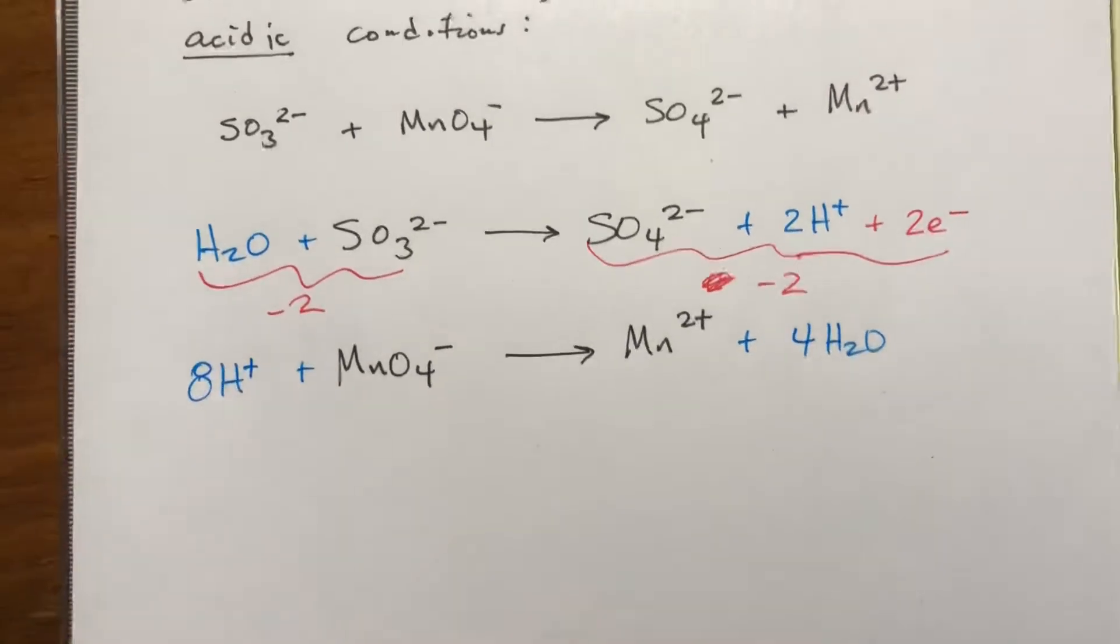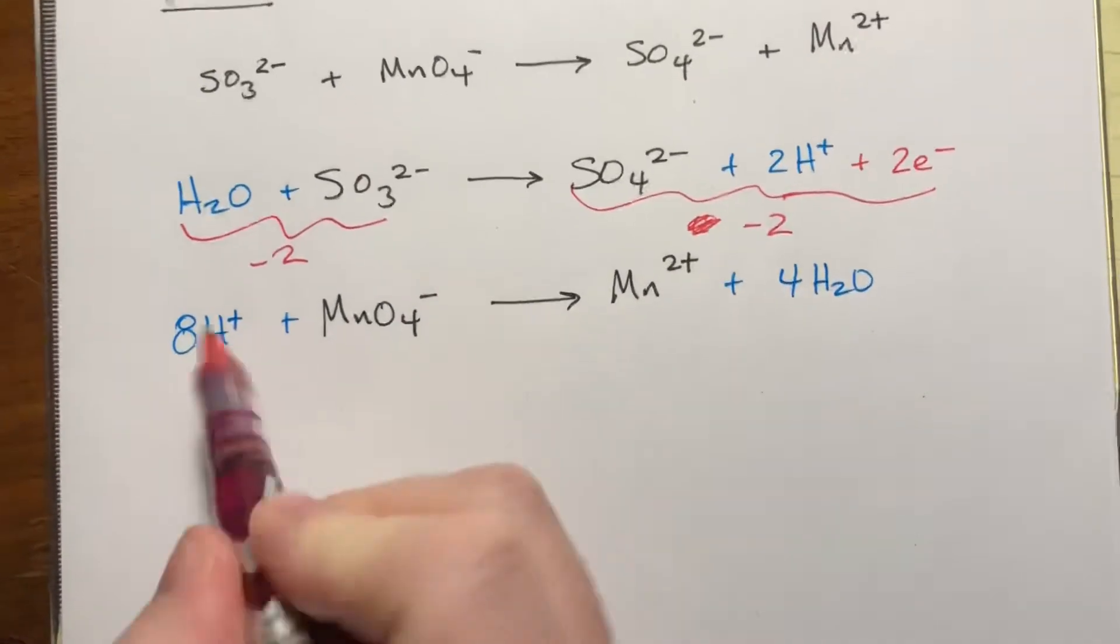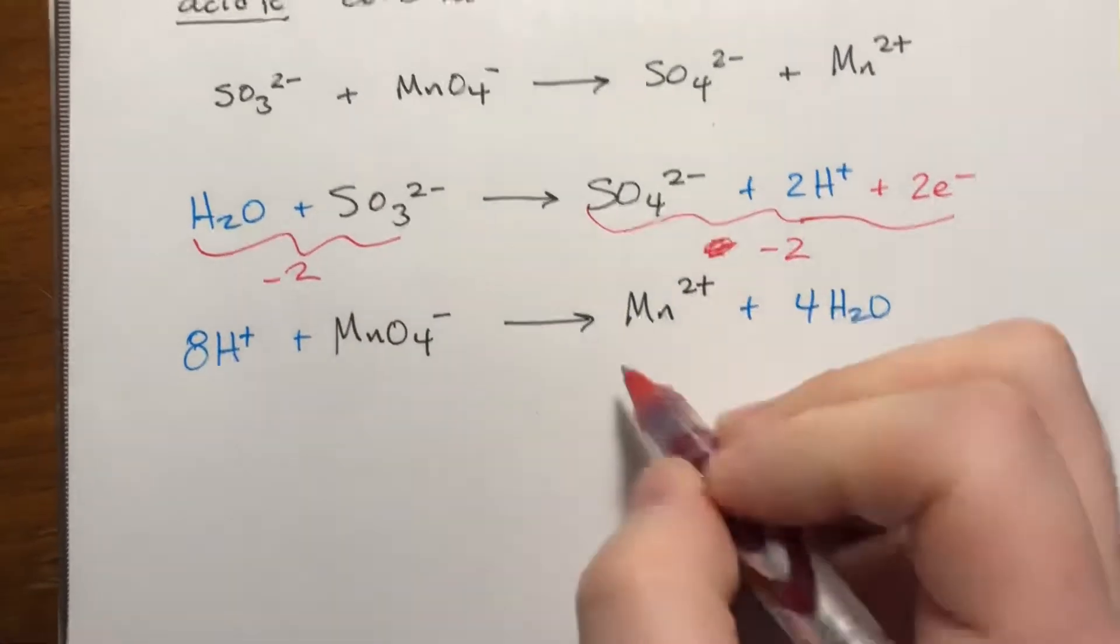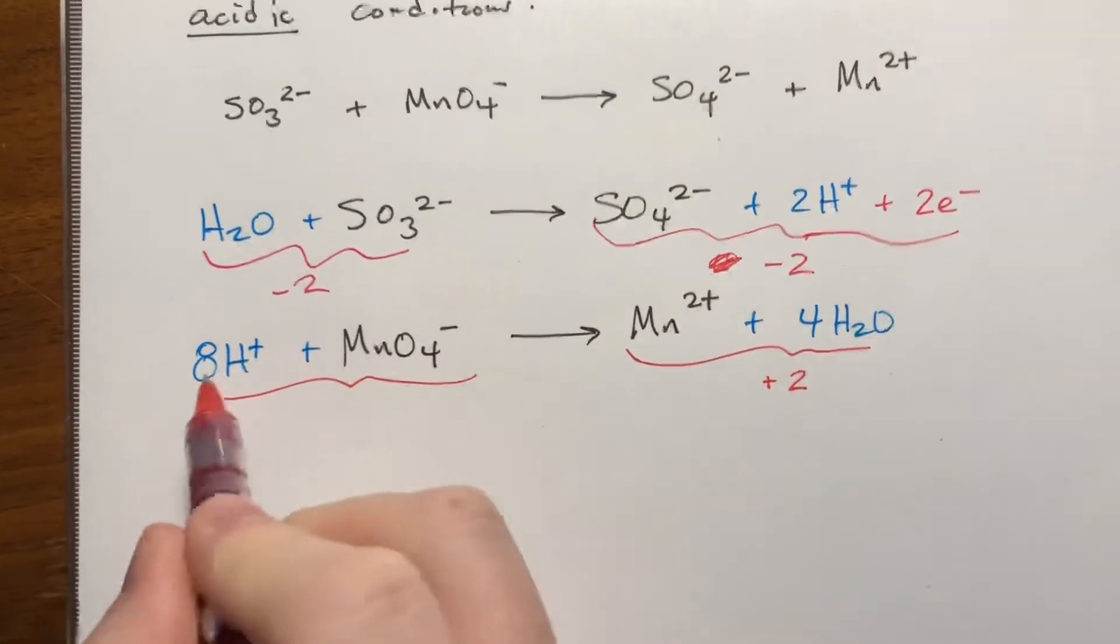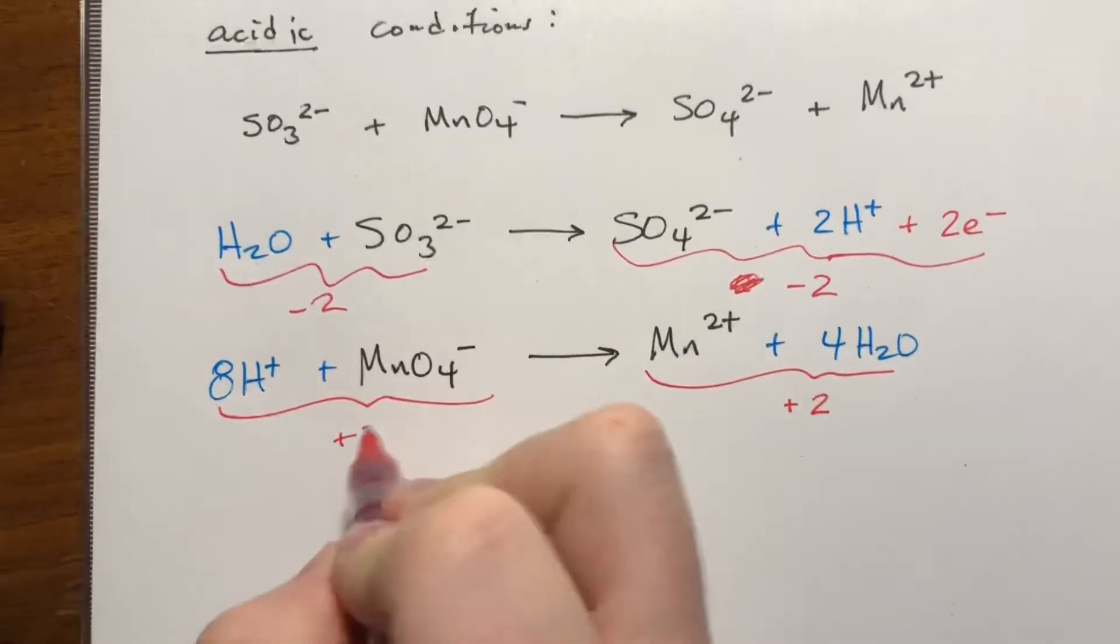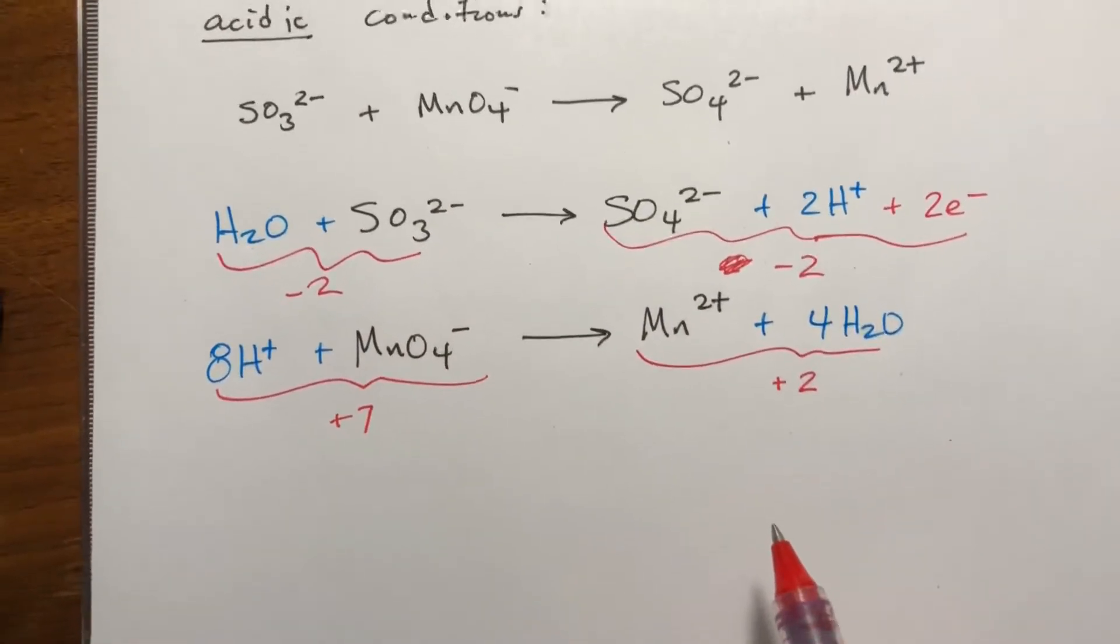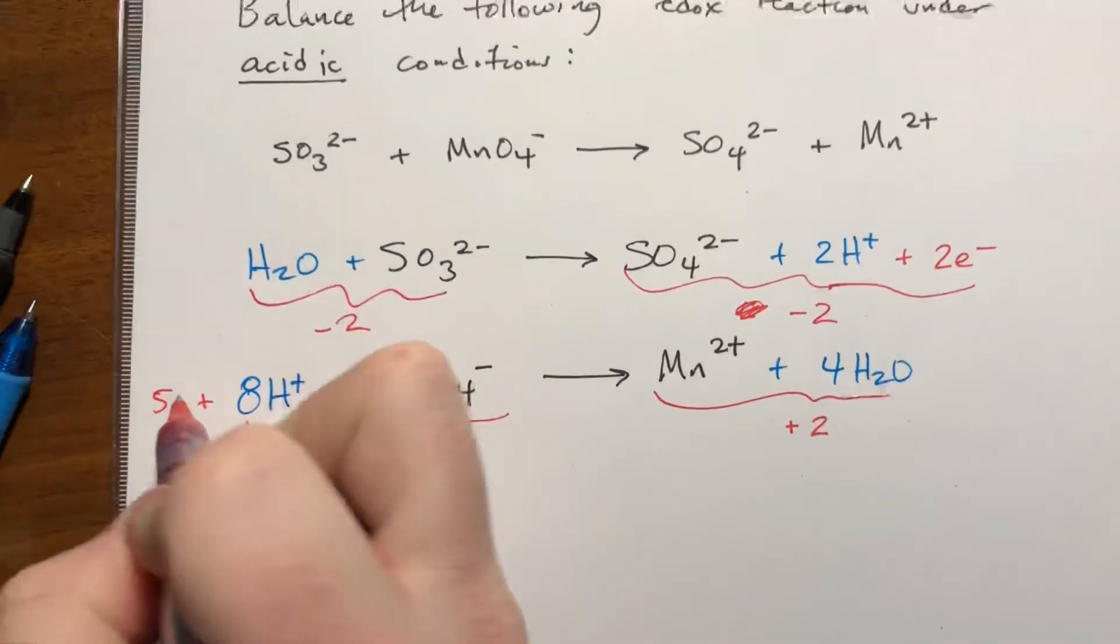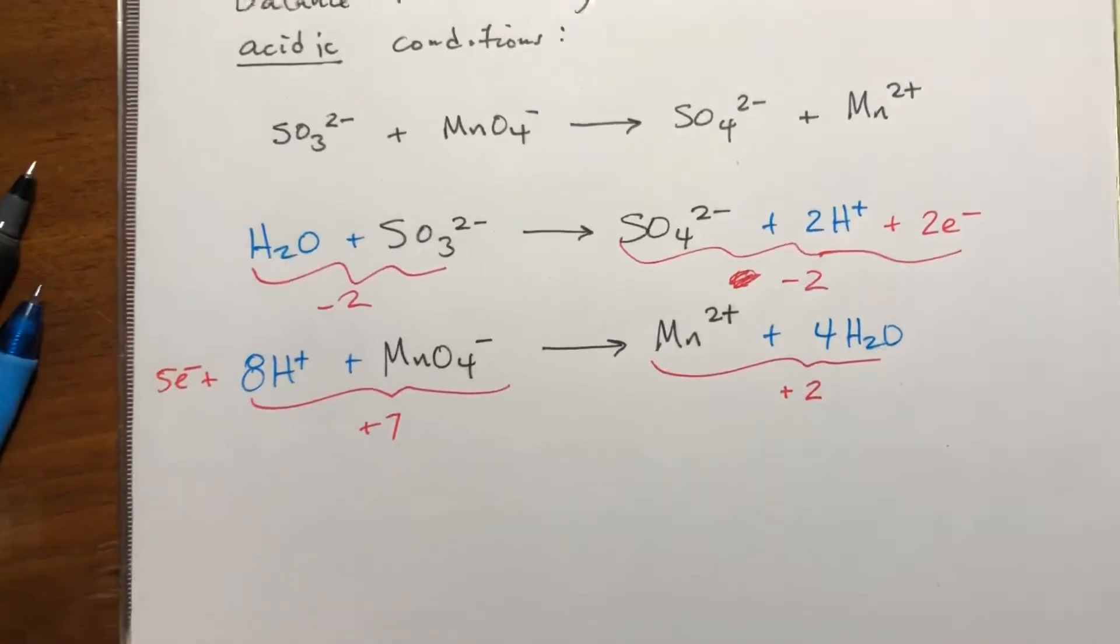Okay, so one manganese, one manganese, four oxygens, four oxygens, eight hydrogens, eight hydrogens. Atoms are balanced. Charges, this side is plus two, this side is eight, because eight times plus one, eight minus one is plus seven. We again do not need them to be zero, we just need them to be the same. So since this is five more than that, we're gonna add five electrons to that side.